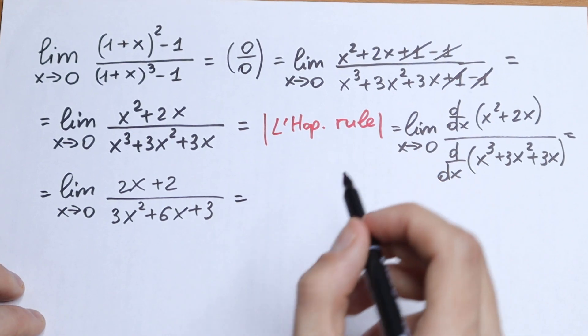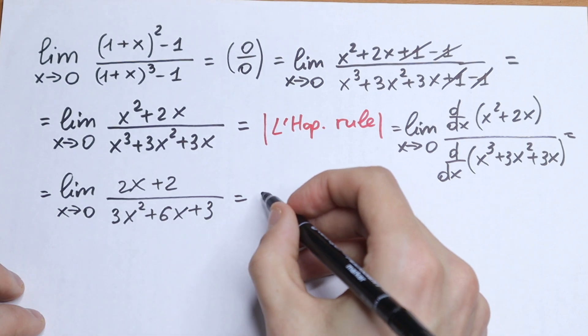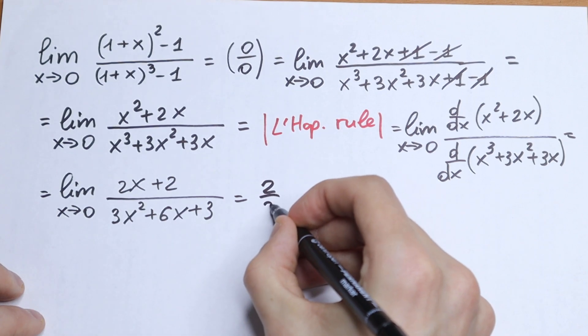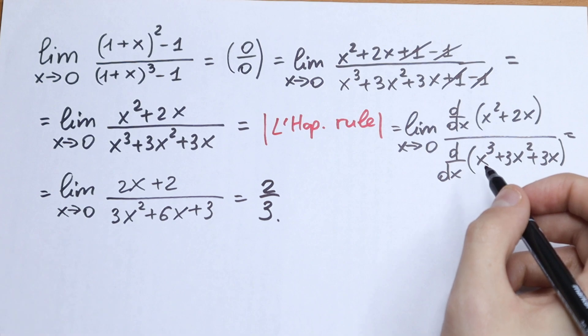So let's plug in 0. We will have 2 over 3, and this is our limit. This is our answer.